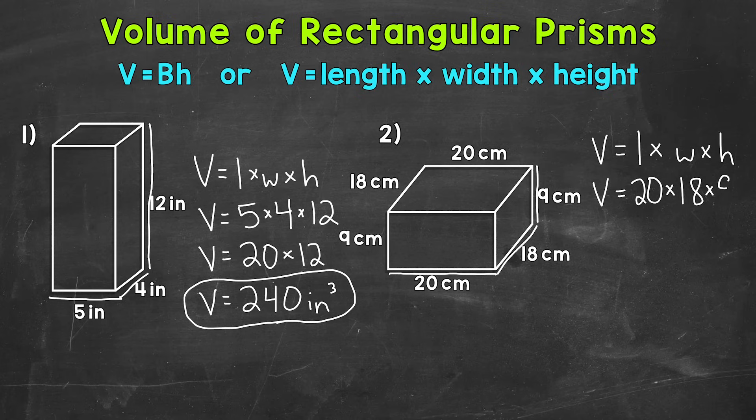Volume equals length 20 centimeters times the width of 18 centimeters times the height of 9 centimeters. So we picked out our length, width, and height. Now remember, don't get too held up on the length and width. If you were to use 18 for your length and 20 for your width, you're still going to get the correct answer.